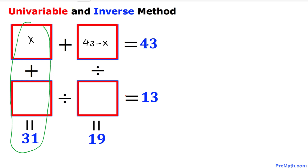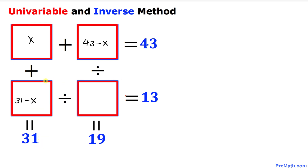Applying the same strategy to this column: we have x here and need to fill the box to get a sum of 31. So I write 31 minus x. Adding x plus (31 minus x), the x terms cancel and we end up with 31.